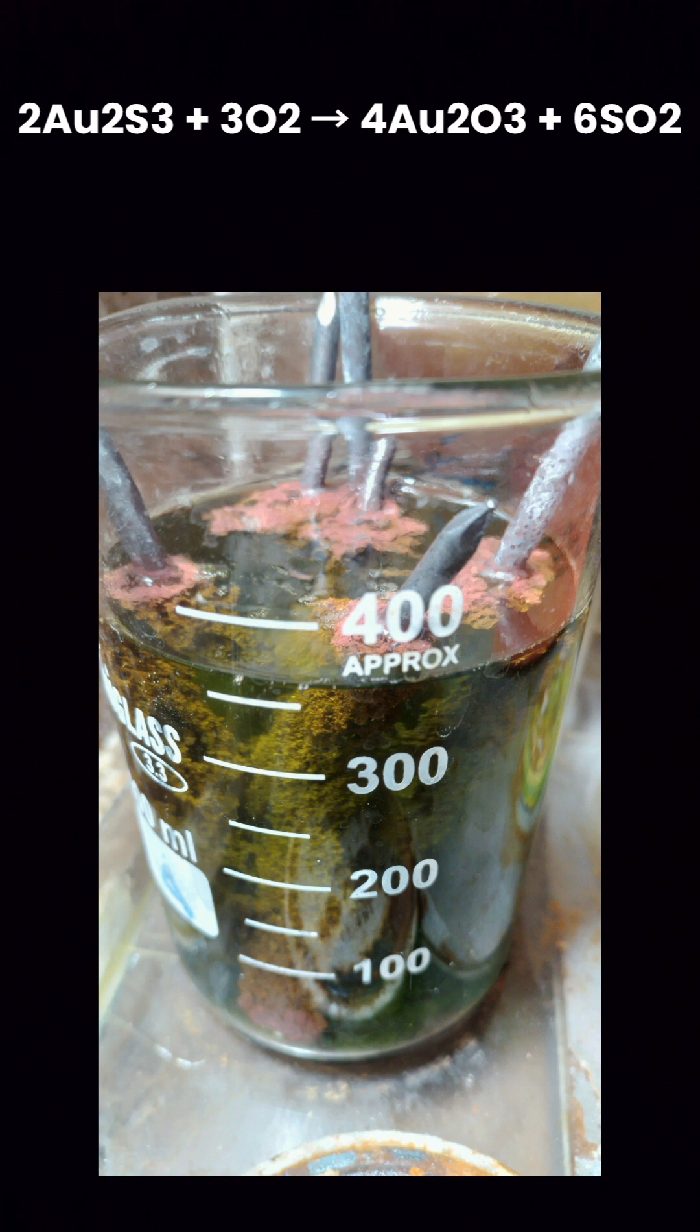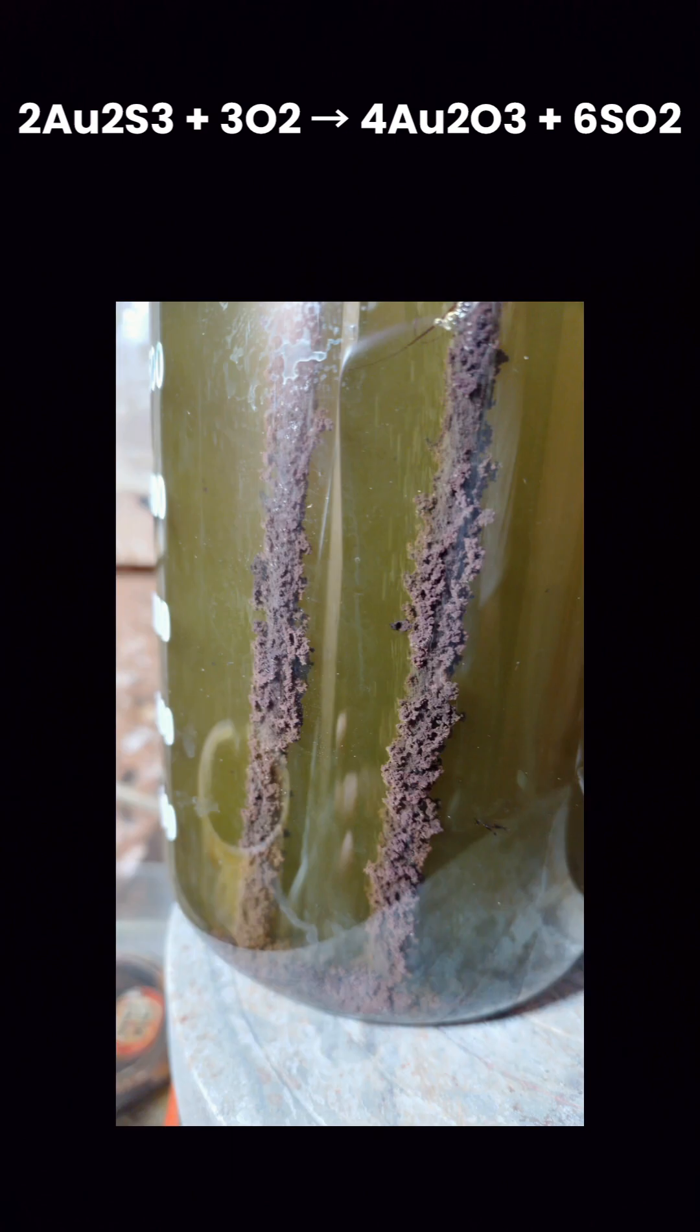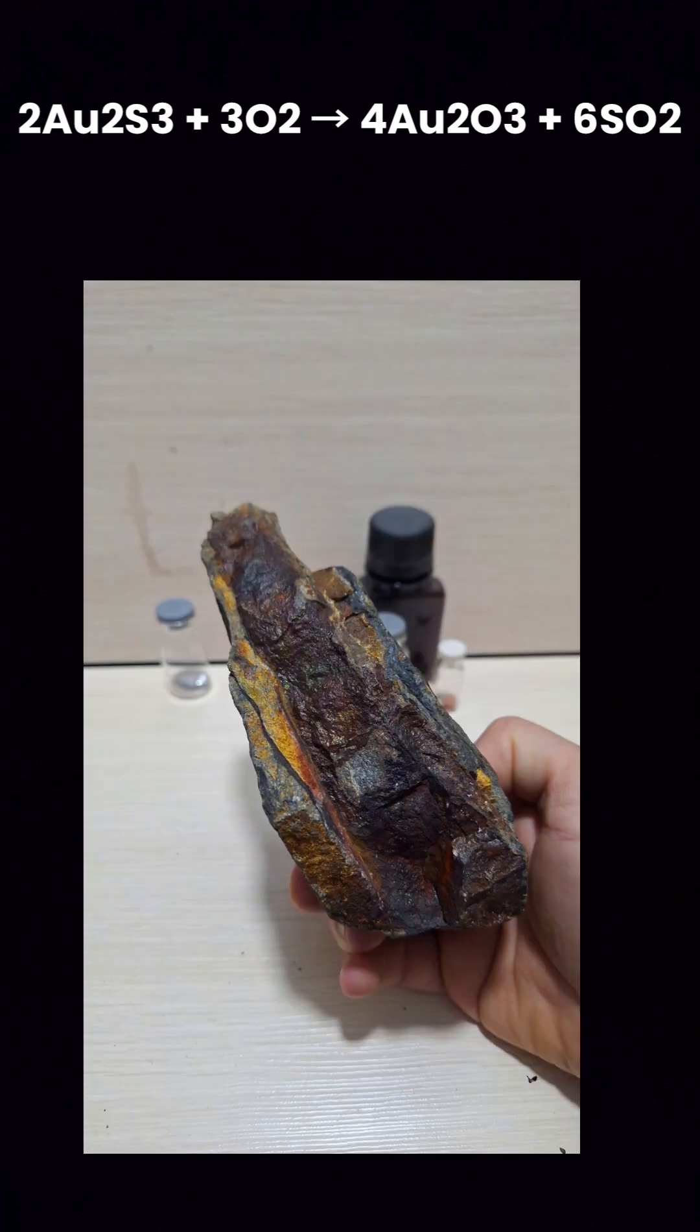This chemical equation precisely describes the oxidation reaction of gold sulfide: 2Au2S3 + 3O2 → 4Au2O3 + 6SO2. Let's break down each part of this equation to understand its deeper meaning.